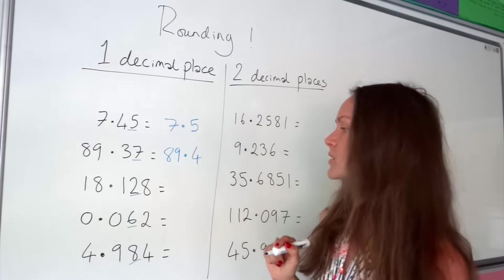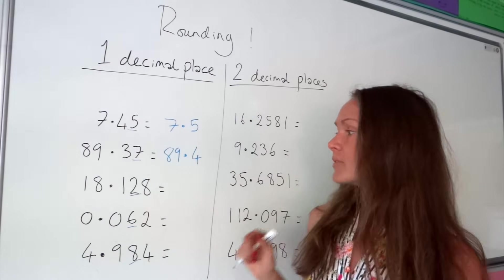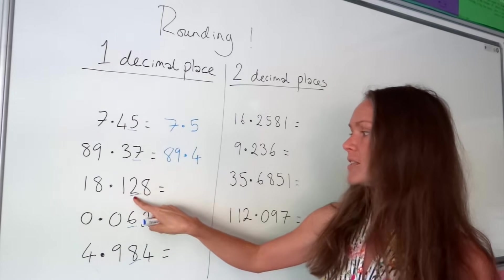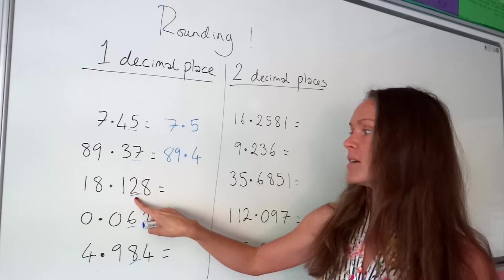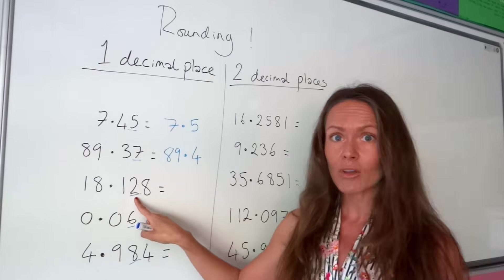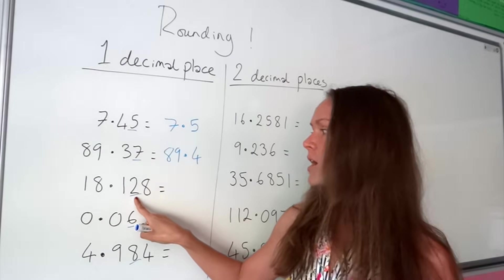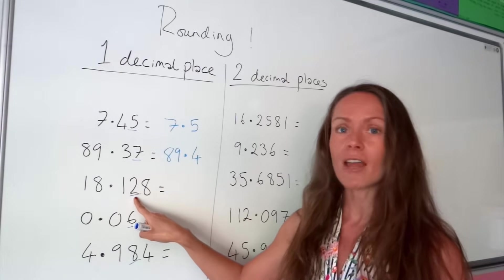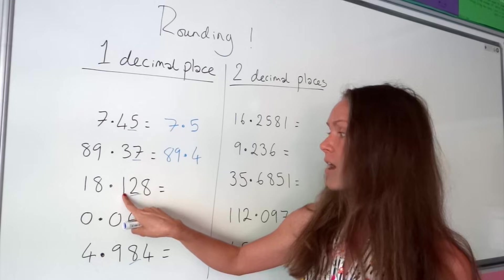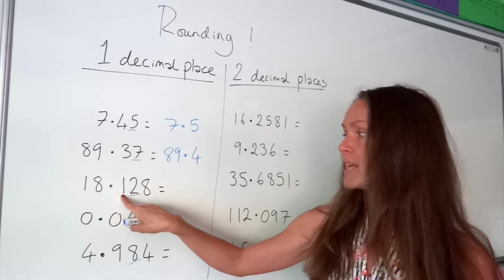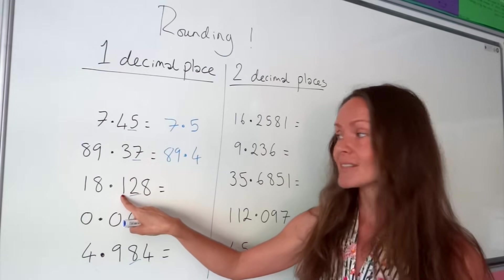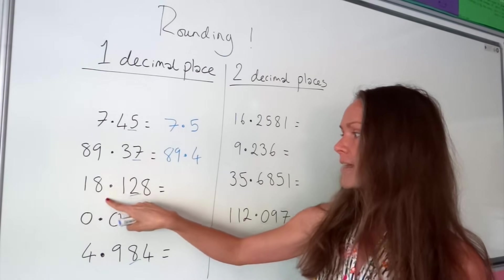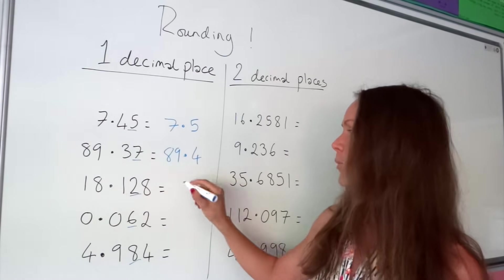On to the next one. This time, the number that's two after the decimal is smaller than five. So remember, when it's smaller than five we don't round up. So this number stays the same and we're just left with 18.1.